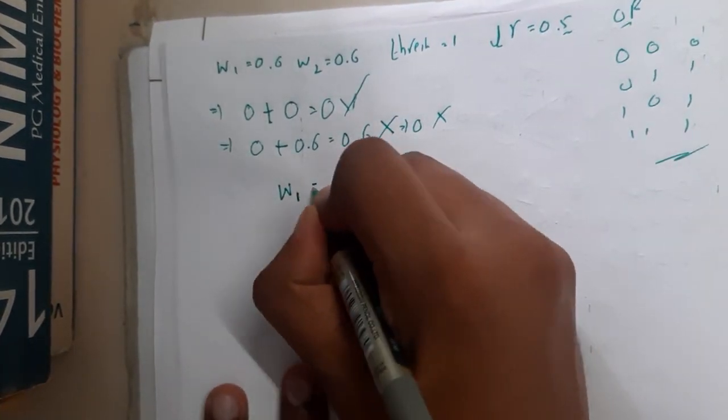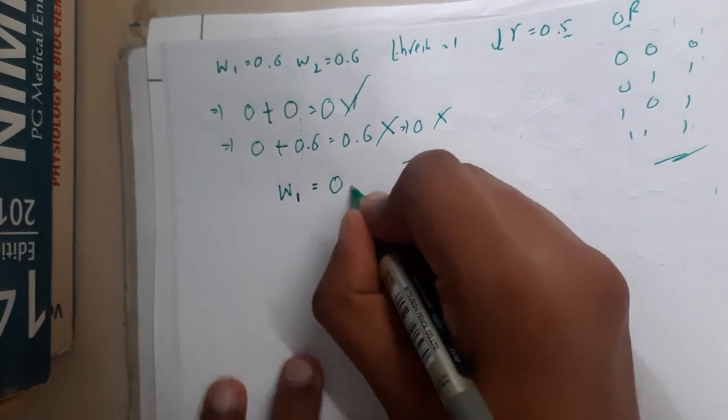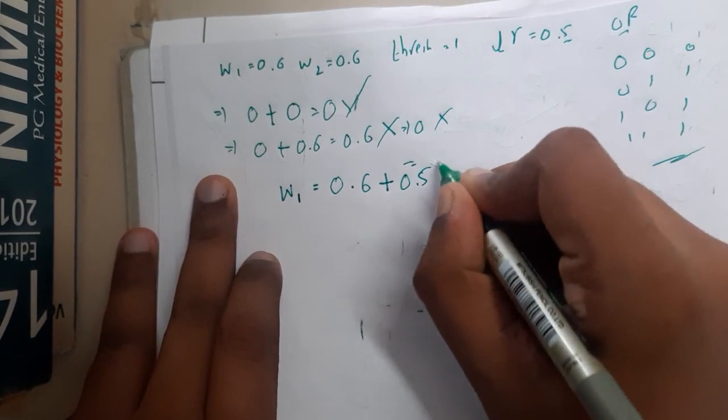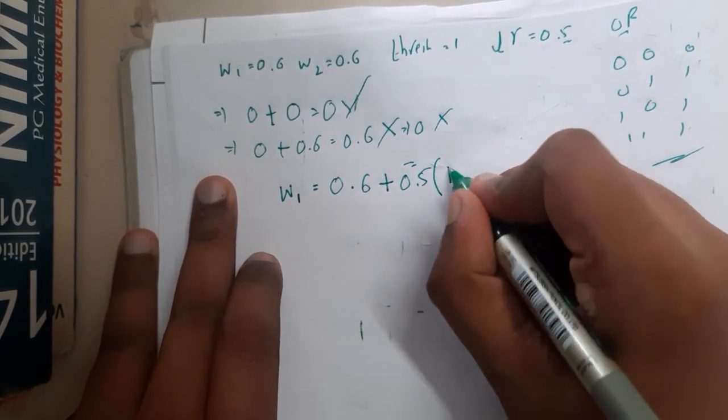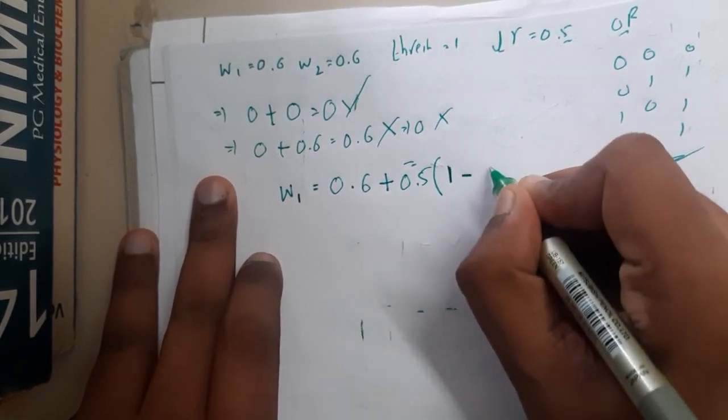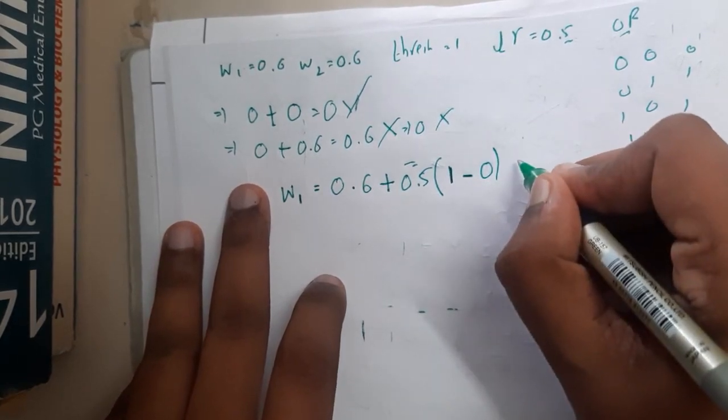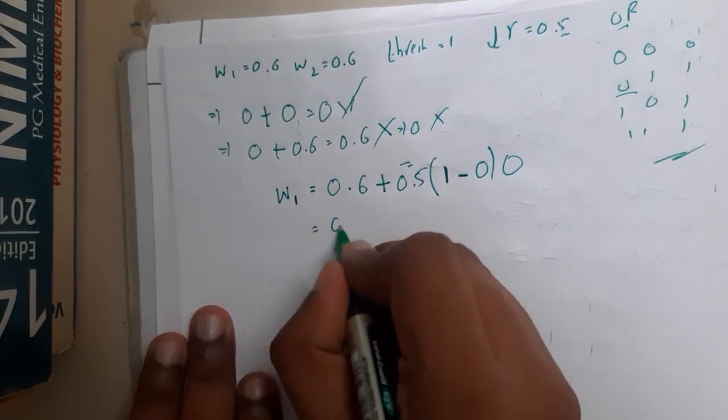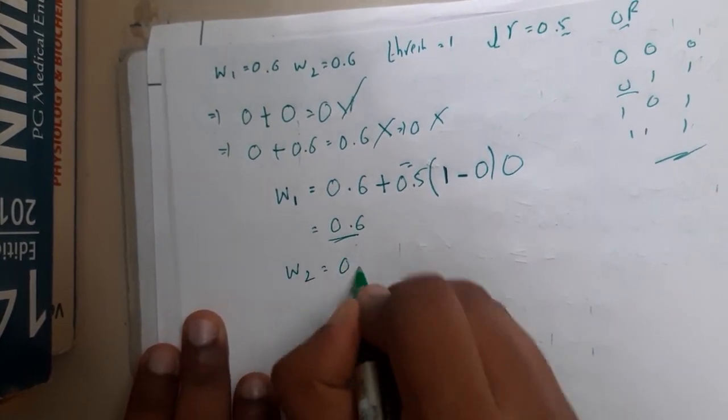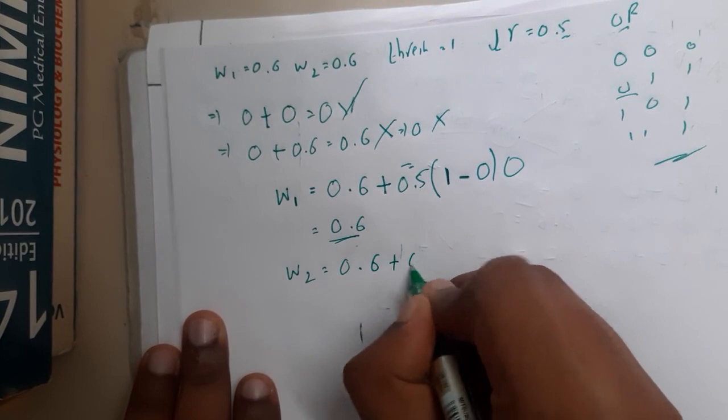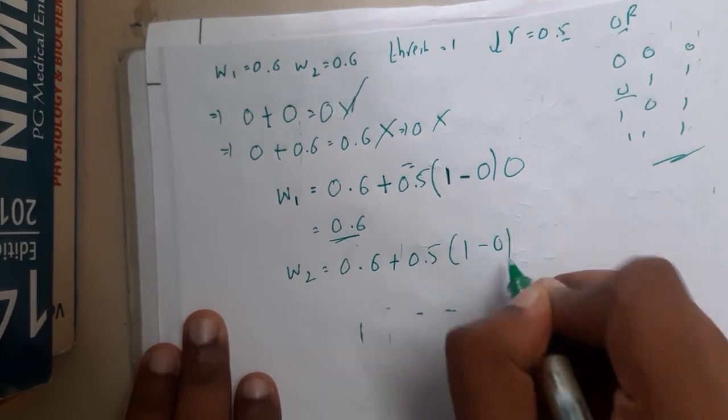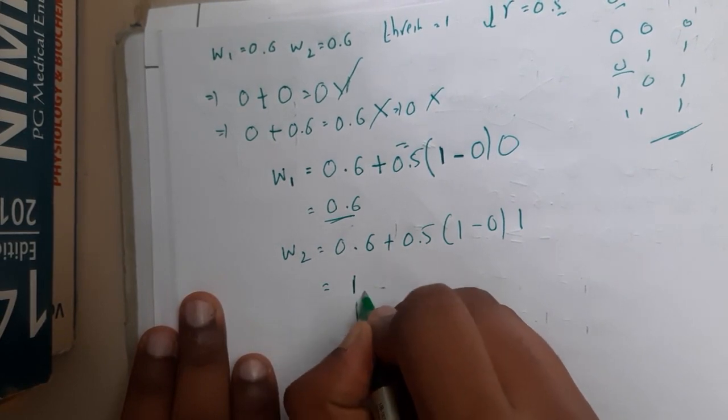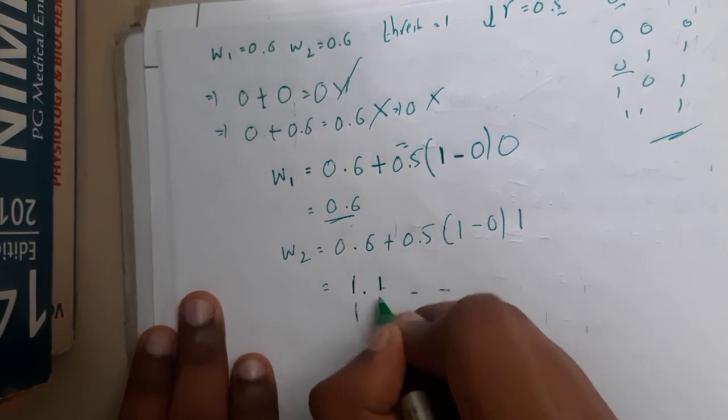Let us find out the new weight. W1 equals the same weight 0.6 plus the learning function 0.5 times the target value 1 minus what we're getting, which is 0, times the input of w1, which is 0. So we end up at 0.6 only. Similarly for w2: 0.6 plus 0.5 times (1 minus 0) times input 1, which increases your value to 1.1.